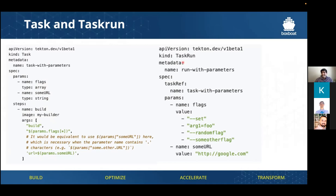In order for a task to run in Tekton, you have to have a task run. The task run references that specific task — you can see the name matches. You pass in specific parameters; in this case, a flag and some URL values are getting passed in to that task, so it knows what parameters it's working with and actually executes the task.